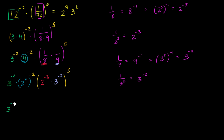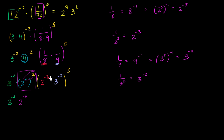Continuing to simplify: we have 3 to the negative 2. Then 2 squared to the negative 2 — multiplying those exponents gives 2 to the negative 4. Then applying the exponent to the product, we get 2 to the negative 3 raised to the fifth power, times 3 to the negative 2 raised to the fifth power.